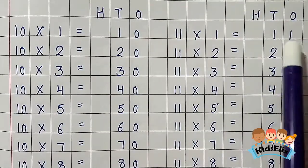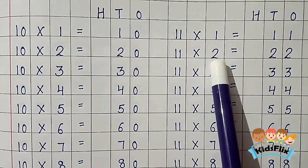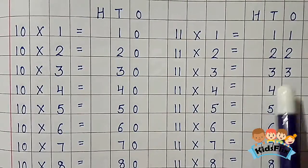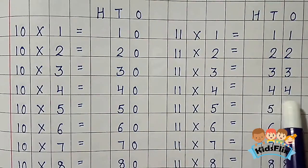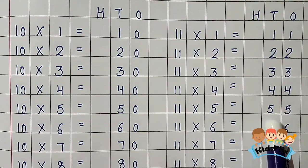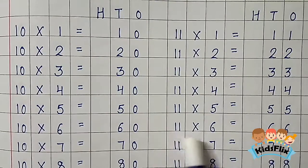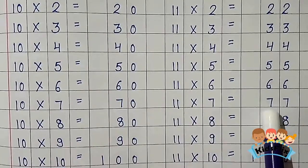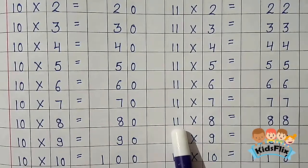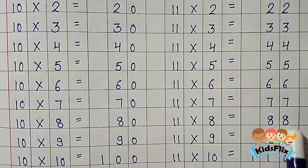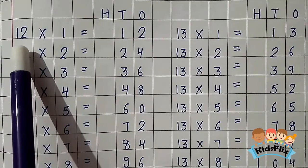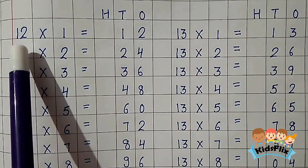11 1s are 11. 11 2s are 22. 11 3s are 33. 11 4s are 44. 11 5s are 55. 11 6s are 66. 11 7s are 77. 11 8s are 88. 11 9s are 99. 11 10s are 110. Now the table of 12.